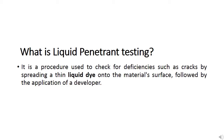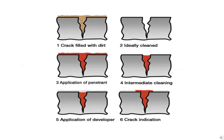Liquid penetrant testing is a procedure used to check for deficiencies, such as cracks, by spreading a thin liquid dye onto the material's surface, followed by the application of a developer. Here you can see the steps used for the process. Note that there is a 10 to 15 minutes dwell time after applying the dye, and also for the developer.